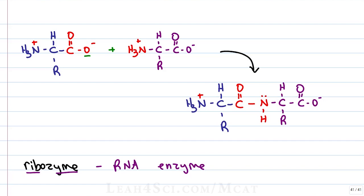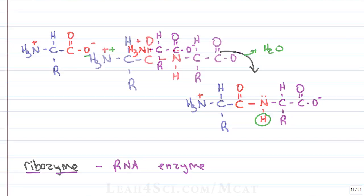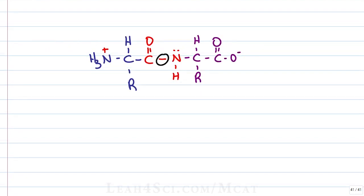We lose one oxygen atom from the carboxylate, two hydrogen atoms, in this case they're both coming from the nitrogen so NH3 goes down to just NH giving me water as a side product. The new bond that forms between the alpha carbonyl and the alpha amine is called a peptide bond which is a covalent bond specifically between the alpha carboxy and alpha amine of two amino acids.